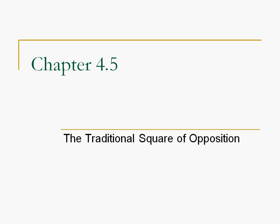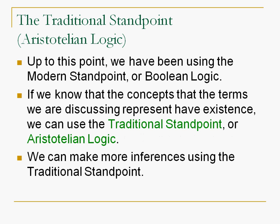So when can we use Aristotelian logic? Really, we can use Aristotelian logic when the things that we're talking about are known to exist. All right, when the things that we're talking about are known to exist. So if we're talking about, you know, dogs, cats, flowers, trees, things like that, we can use Aristotelian. If we're talking about fairies and leprechauns and things like that, we're going to use the Boolean standpoint.